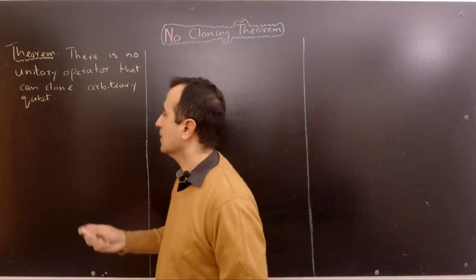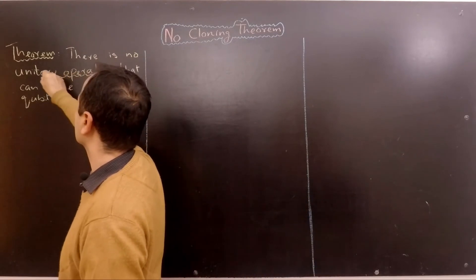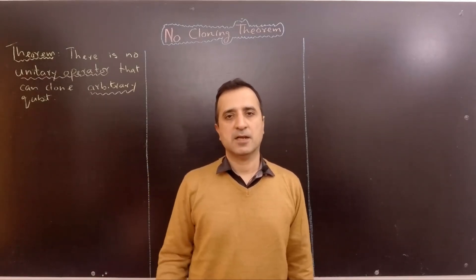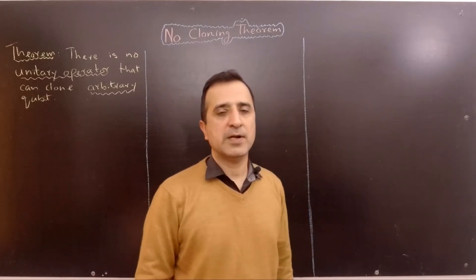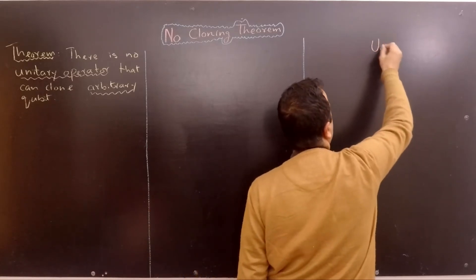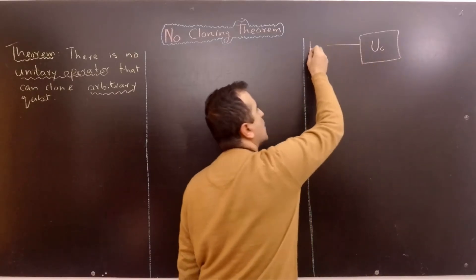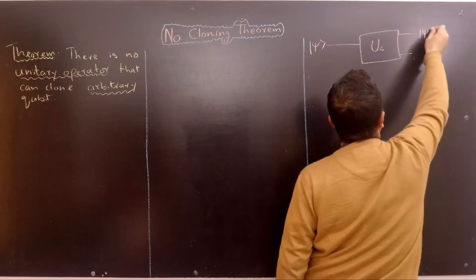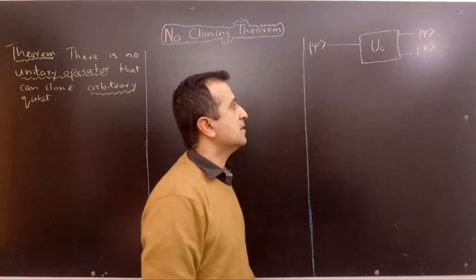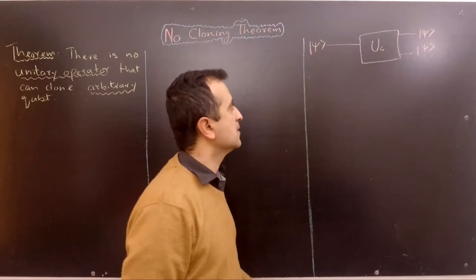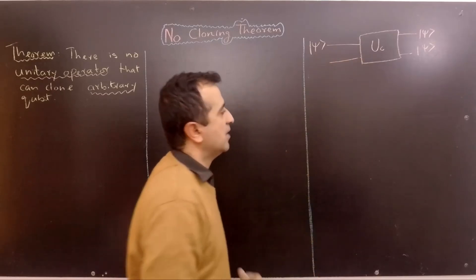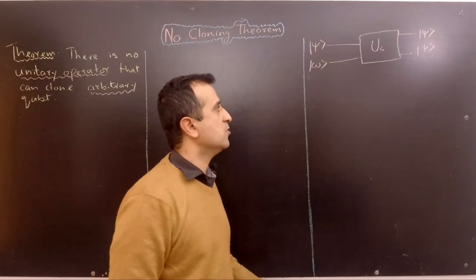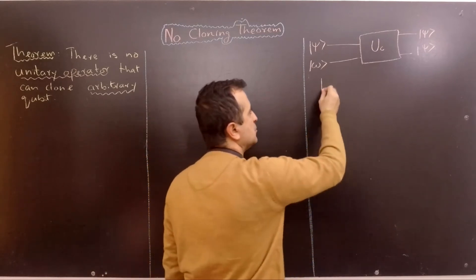In the statement of the theorem, there are two key words: number one is the unitary operator, and number two is arbitrary. Each unitary operator can be expressed in a circuit. So assume that our unitary operator that can clone qubits is UC. It takes an input of arbitrary qubit |ψ⟩ and provides two identical copies as output. However, in a unitary circuit, the size of input must be the same as the size of output. Therefore, our unitary circuit will take another input of some qubit — let's say that qubit is |ω⟩. We can choose |ω⟩ to equal any arbitrary qubit, but for the simplicity of the proofs, I'm using |ω⟩ = |0⟩.